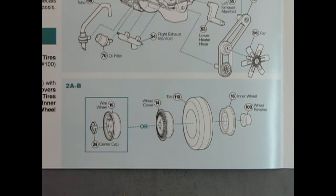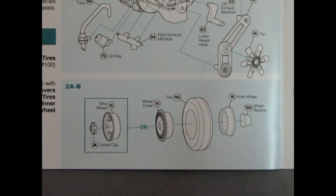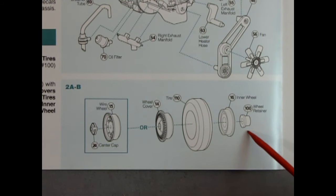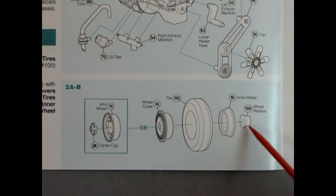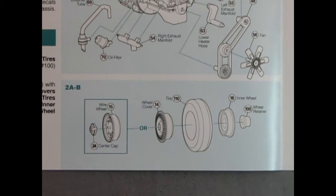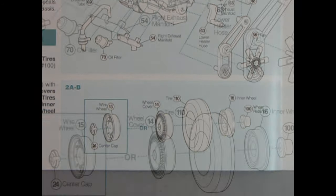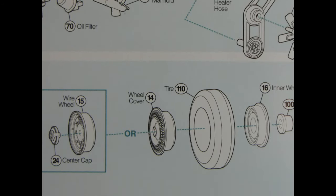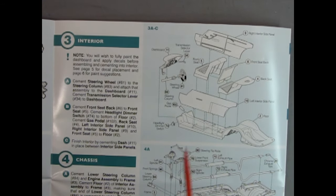Down below we have our wheel assembly. Here we have our wheel retainer and the inner wheel. Interesting how they're showing this going together. We also have our tire, our wheel cover or you can use these wire wheels with the center cap. So that is a really cool option.